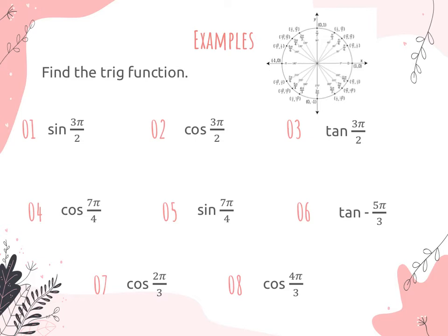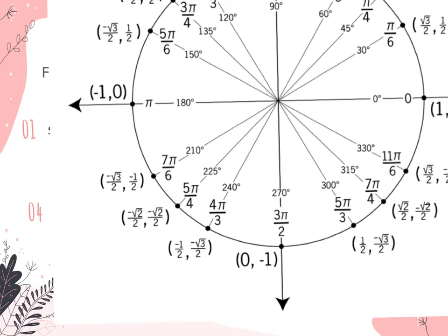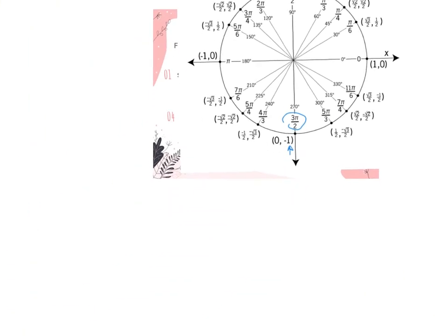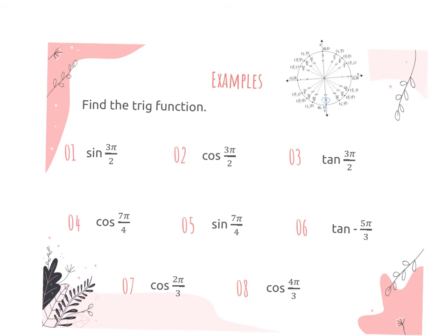Let's go ahead and see if we can find the values for these eight questions. The first three are what you had to do in last night's homework. This 3 pi over 2 is equivalent to 270 degrees, so it's a quadrant angle. All we have to do is find 3 pi over 2 on our unit circle — it's right here. Because I'm doing sine, I'm going to look at the y, and the answer to sine of 3 pi over 2 is negative 1.